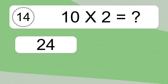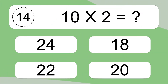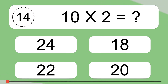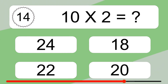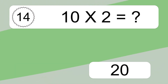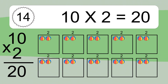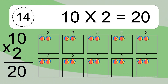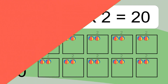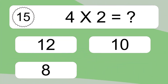10 times 2 equals what? 10 times 2 equals 20. We have 10 boxes, and each box has 2 colorful balls inside. If you count all the balls in all the boxes together, you will have 10 times 2 balls. This equals 20 balls.